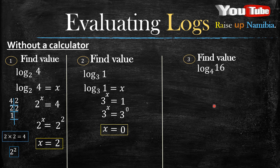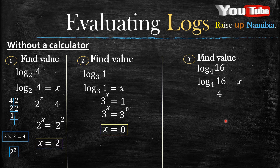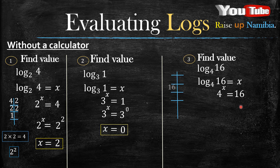Now how about log base 4 of 16? It's the same concept — make it equal to x, then change it into exponential form. After that, make the bases the same. Always start with the larger one: 16 divided by 2 equals 8, 8 divided by 2 is 4, 4 divided by 2 is 2, and 2 divided by 2 is 1.